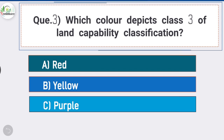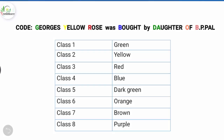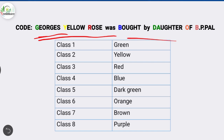Question number three: which color depicts class 3 of land capability classification? The answer is option A, red. A mnemonic to remember: class 1 is green, class 2 is yellow, class 3 is red, class 4 is blue, class 5 is dark green, class 6 is orange, class 7 is brown, and class 8 is purple. Since 'blue' has four letters, it belongs to class 4.